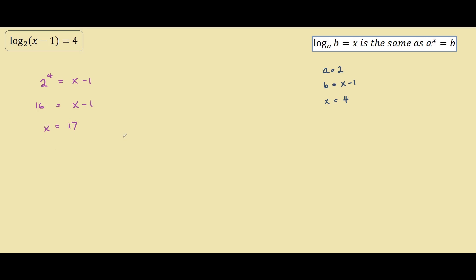You can double check this by entering into your calculator. The log of 2 to 17 minus 1, if you enter that into your calculator, you should receive an answer of 4. Therefore, x equals 17 is our answer.